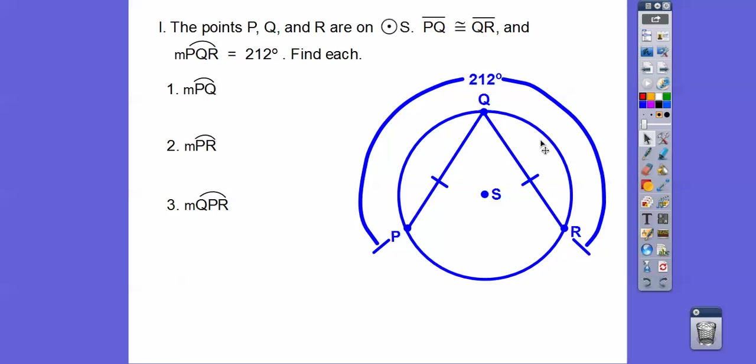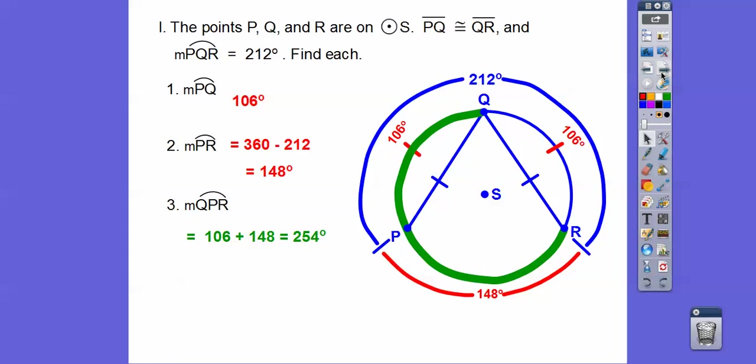The measure of arc PR is down here. Here's PR right here. It's going to be the rest of the circle, so it's 360 minus the 212, so 148. And arc QPR, we're going to add the 106 plus 148, and we get 254 on that. Or we could have done 360 minus this side right here, 360 minus 106 will get us also 254. I hope that makes sense. Take care.